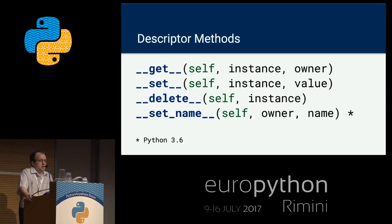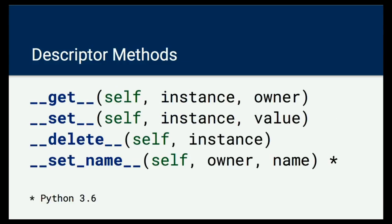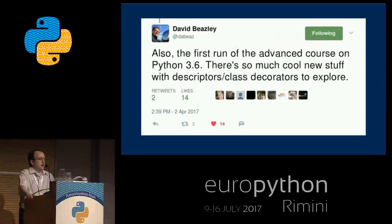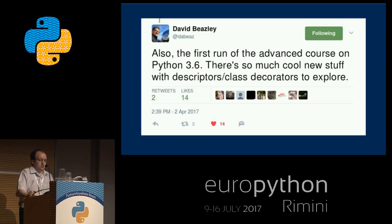Descriptors are achieved by a protocol, which in Python is entailed by magic methods. Special behavior is achieved by magic methods. In this case, four methods comply with the descriptor protocol: basically `__get__`, `__set__`, and `__delete__`. The last one — `__set_name__` — was added in Python 3.6, which was an interesting enhancement. The rest of this presentation will follow Python 3.6 as a reference, so the talk is not only discovering descriptors but perhaps also rediscovering them — there is new stuff in the current version of Python.